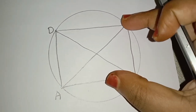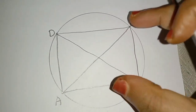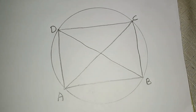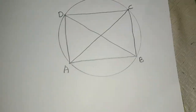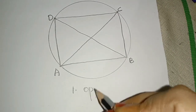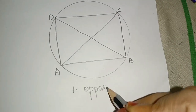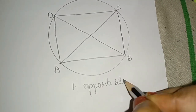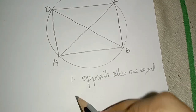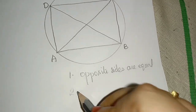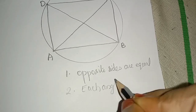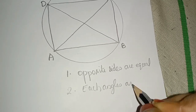The vertices are A, B, C and D. The properties of the rectangle are: the opposite sides of a rectangle are equal, and each angle is 90 degrees.